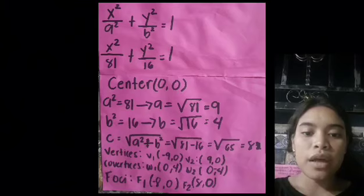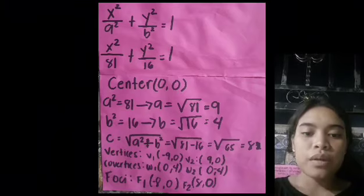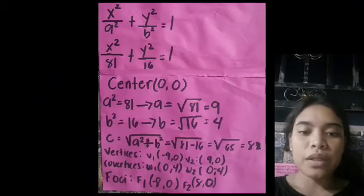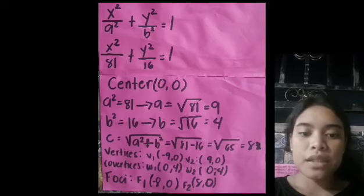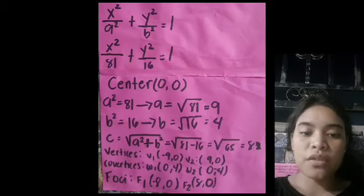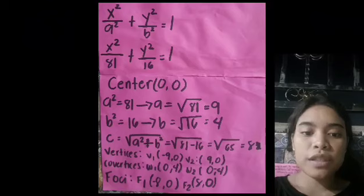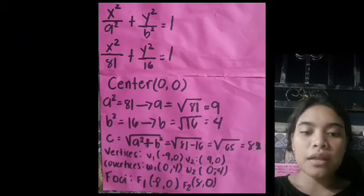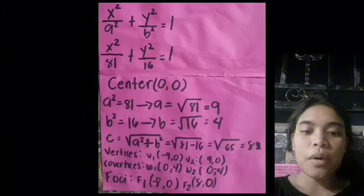And for the foci, we need to subtract a² and b². So 81 - 16 = 65. The square root of 65 is 8. So our foci is (-8, 0) and (8, 0).